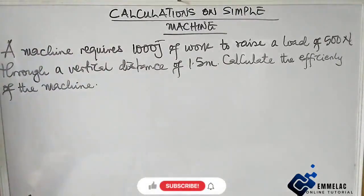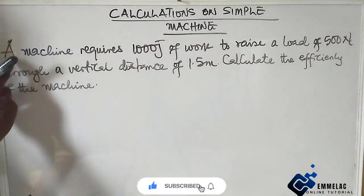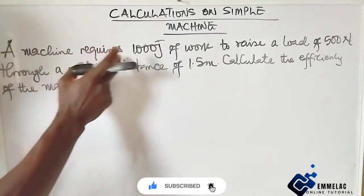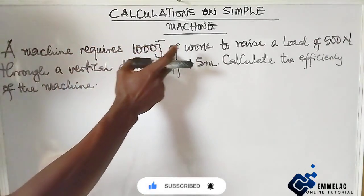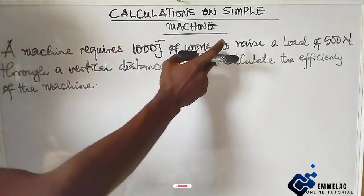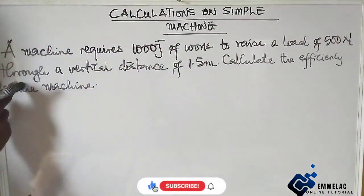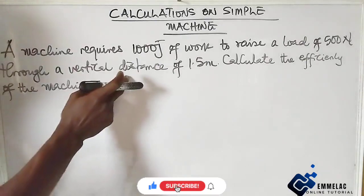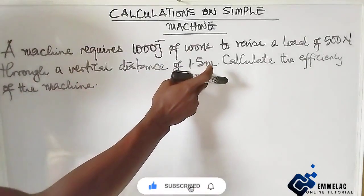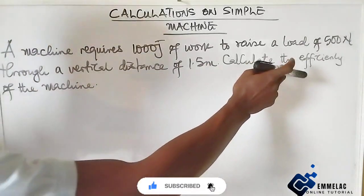Welcome to MLAC Online Tutorial. Before us is this question on simple machines. Try this exam question: A machine requires 1000 joules of work to raise a load of 500 newton through a vertical distance of 1.5 meter. Calculate the efficiency of the machine.